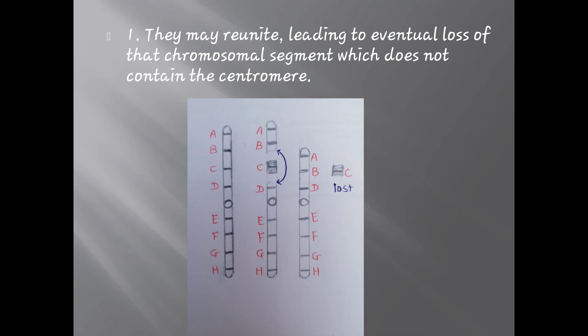Firstly, they may reunite, leading to eventual loss of the chromosomal segment which does not contain the centromere. In the diagram you can see a chromosome with segments A, B, C, D, centromere, E, F, G, H. There are two breaks occurring — the first between segment B and C, and the second between segment C and D — forming a broken segment C. This segment without centromere will eventually be lost, and the two ends will join together to form a deficient chromosome.